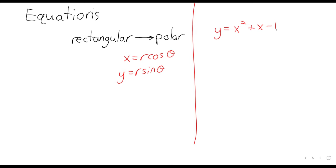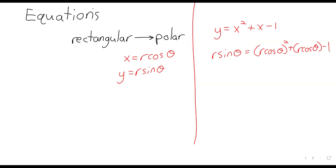So if we have y equals x squared plus x minus 1, and we really want to write this in polar coordinates, we can say that r times the sine of theta equals r times the cosine of theta, squared, plus r times the cosine of theta, minus 1.